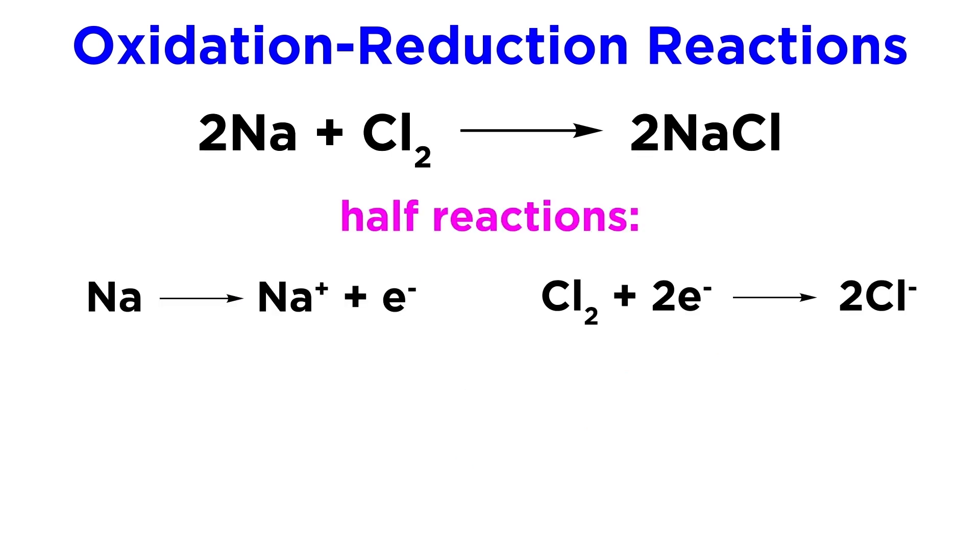These processes can be illustrated by half-reactions for these substances. From these half-reactions, we can see that all that is really happening is electron transfer, and this is what is referred to as an oxidation-reduction reaction, or a redox reaction.